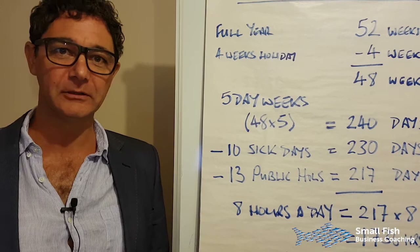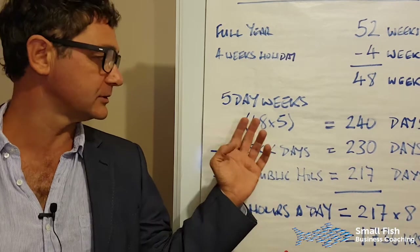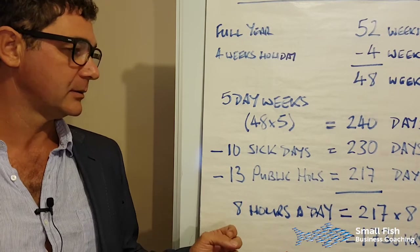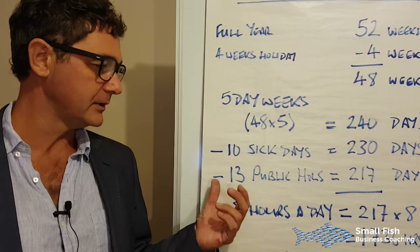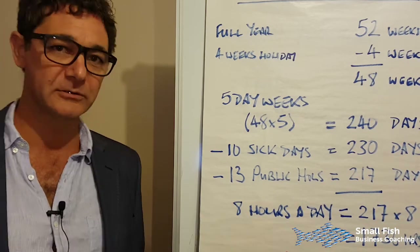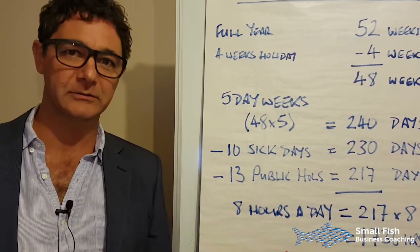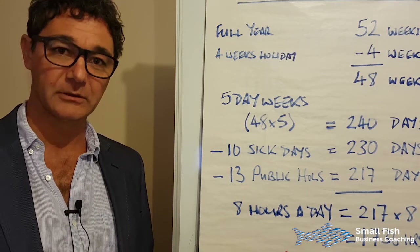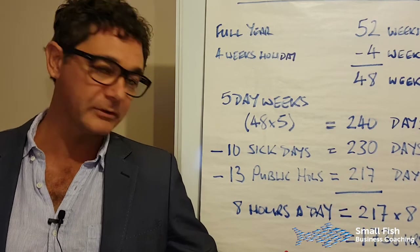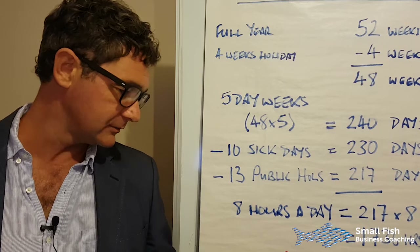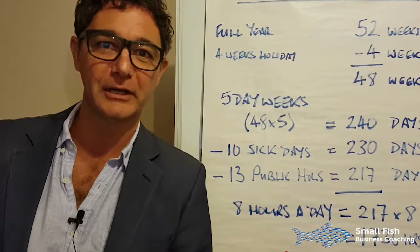A full year is 52 weeks. You pay four weeks holiday, so you're down to 48 weeks. At five-day weeks, that's 240 days — but you have to pay 10 sick days, so we're down to 230 working days. Then subtract 13 public holidays and we're at 217 paid days. At eight hours a day, that's 1,736 hours you're paying people for. So $68,550 divided by 1,736 gives you $39.48 per hour that they actually work.